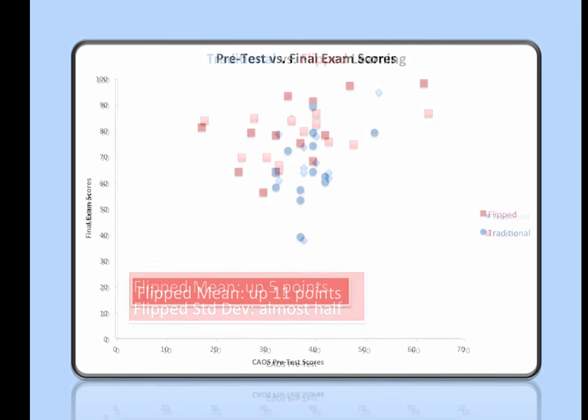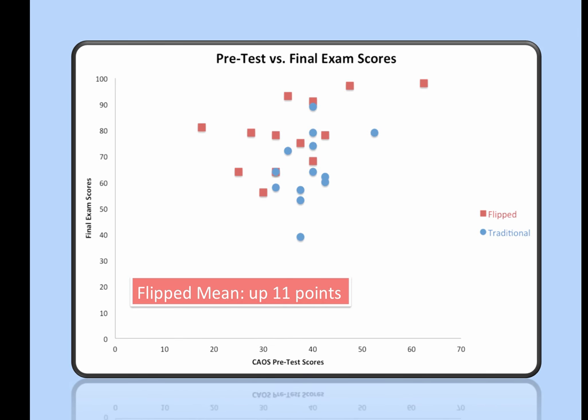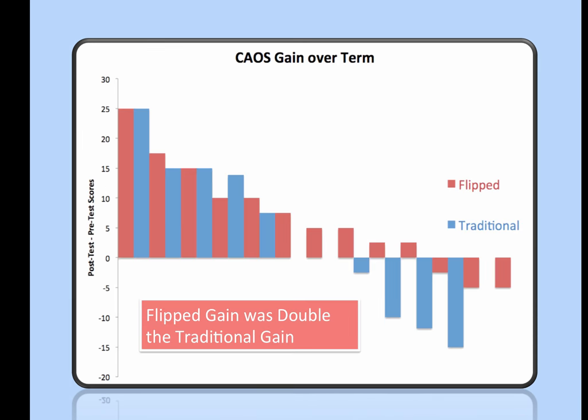And they really came out on top—11 points higher on average on the final exam scores. Looking at the CAOS results, each bar represents a student, and the bar height represents the gain in knowledge as measured by the CAOS post-test minus the CAOS pre-test.